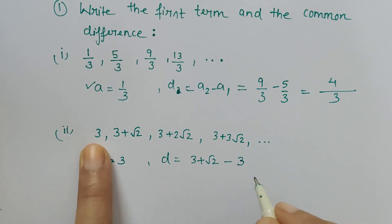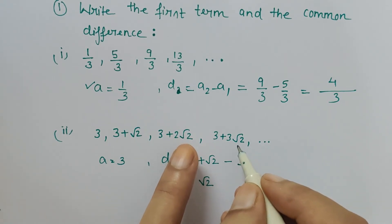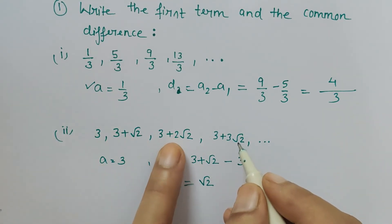We will always get d as the same value, be it any two terms in the same order. Like this minus this, we will also get √2. Let me show you how.